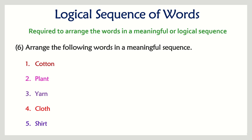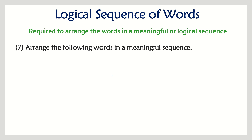Next question: cotton, plant, yarn, cloth, and shirt. The correct sequence starts with plant — a plant produces cotton. From the cotton we extract the yarn, from the yarn we manufacture a cloth, and from the cloth you can make a shirt. That is the logical sequence.